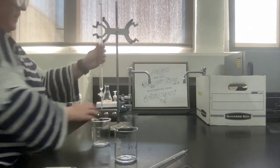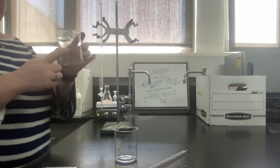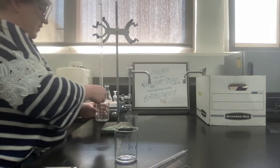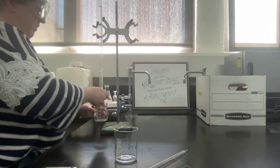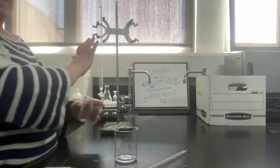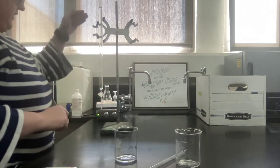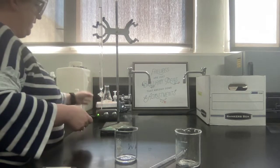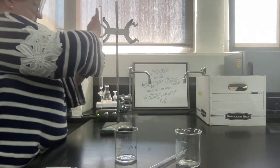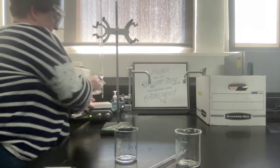So before I take my initial reading, I'm going to season the buret, meaning I'm going to take my beaker that had the NaOH in and just let a little bit out, doesn't matter how much, just to make sure that everything in here is NaOH. So now I will take my initial reading and I will move my setup with my acid underneath the buret.